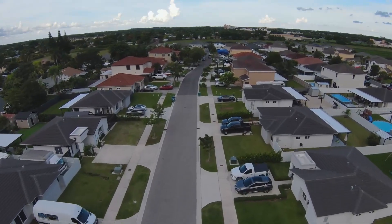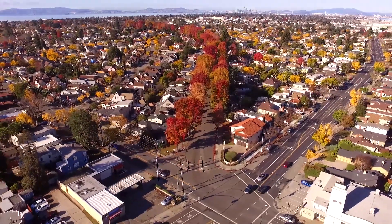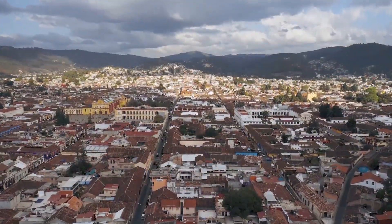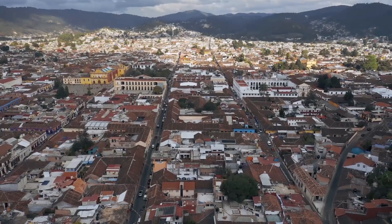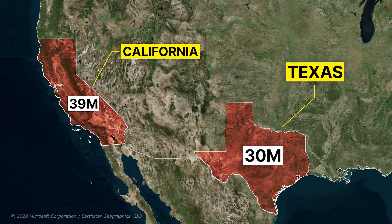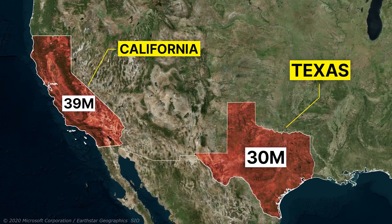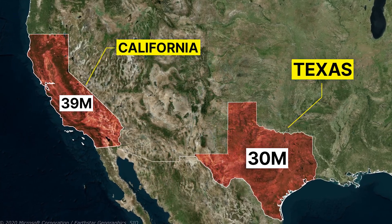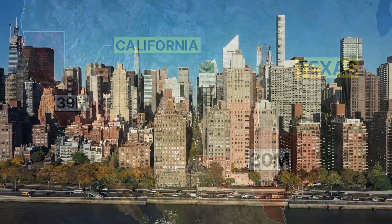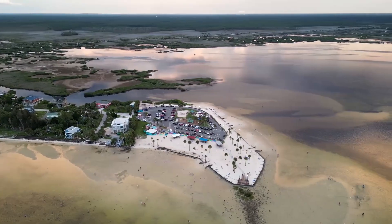Now, we come to the two important states that constitute the most populated states. Texas and California are located in the southern and western belt of the United States, in contrast to the heavily populated East Coast, and passing through the central belt which is devoid of population, we reach these two states. The population of California is 39 million people and the population of Texas is 30 million people, for a total of 69 million people that alone constitute 20 percent of the population of the United States, while covering only 11 percent of the area.